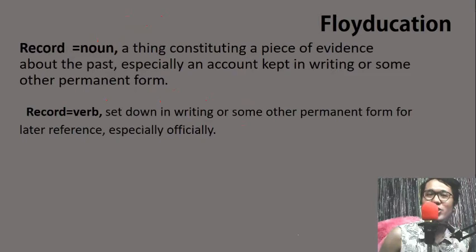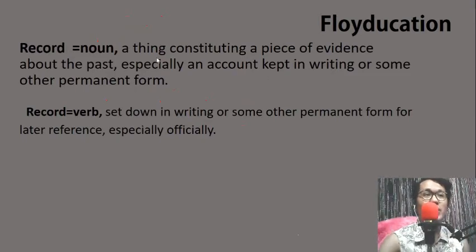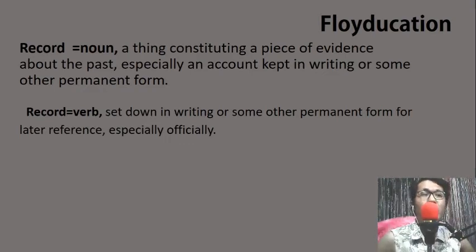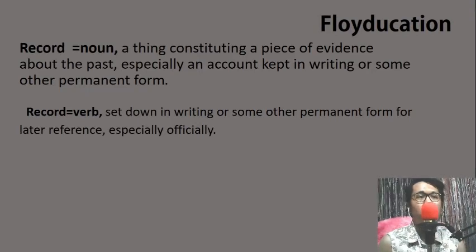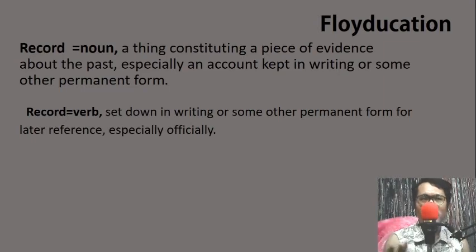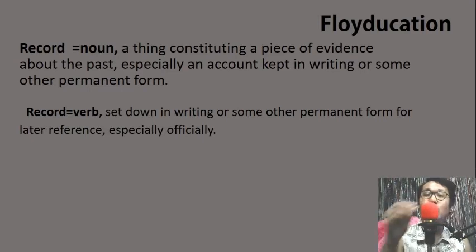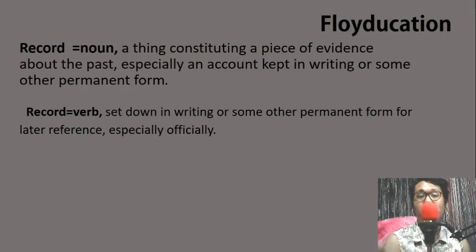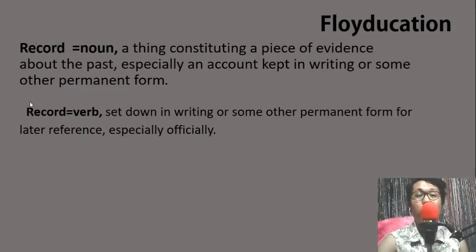Welcome to our last topic: the difference between record and record. Number one, 'record' is a noun — it constitutes a piece of evidence about the past, especially an account kept in writing or some other permanent form. For example, if you go to the hospital, you have records written on paper. Number two, 'record' is a verb — to write details or information about something or someone. So: 'record' as a noun, and 'record' as a verb.